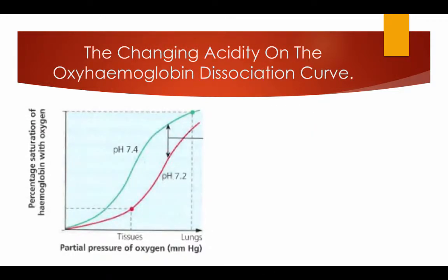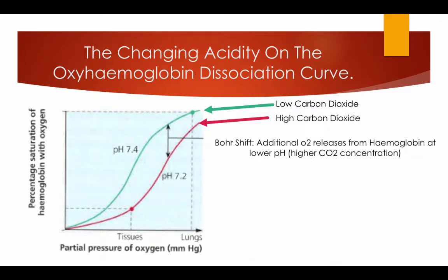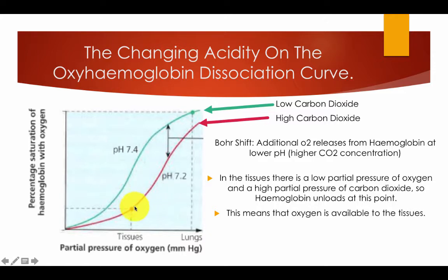The change in acidity on the oxyhaemoglobin dissociation curve. The green line shows low carbon dioxide and the red line shows high carbon dioxide. The Bohr shift causes additional O2 release from the haemoglobin at the lower pH. In the tissues there is a low partial pressure of oxygen and a high partial pressure of carbon dioxide, so the haemoglobin unloads at this point, meaning that oxygen is available to the tissues.